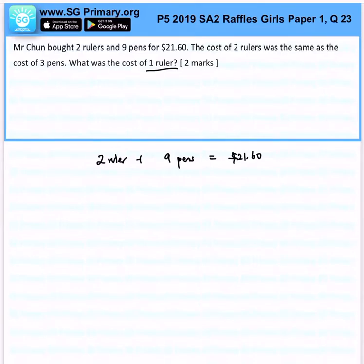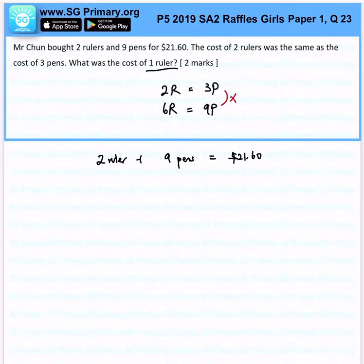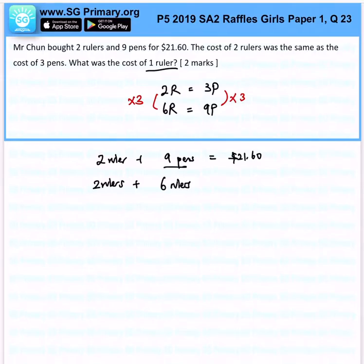If 2 rulers is the same price as 3 pens, you realize that 9 pens will be the same as 6 rulers, because we multiply by 3 on each side. So immediately, 2 rulers plus 6 rulers — because I just converted 9 pens to 6 rulers — this would be $21.60.